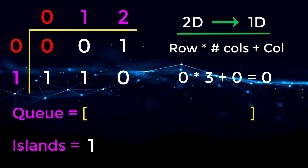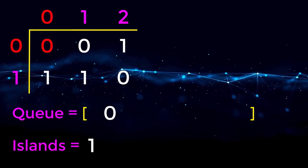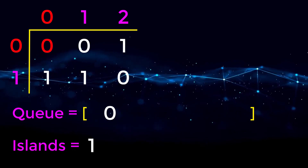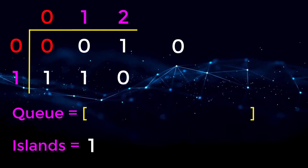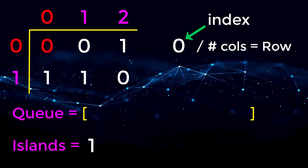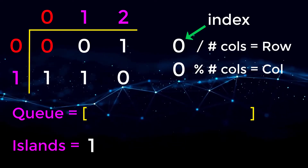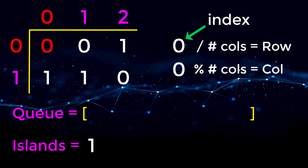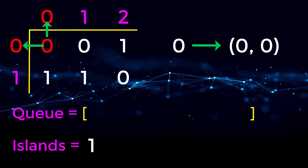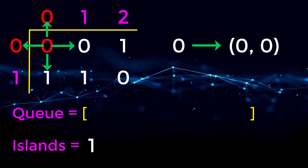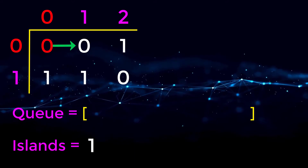We add the number zero to our queue and start our BFS from this position. We continuously remove and add to our queue until there is no more land connected together. Pulling from the queue we get the number zero, and we convert this back to a 2D coordinate: zero divided by three is zero for the row, and zero mod three is zero for the column — giving us position zero zero. Now we check the left, up, right, and down directions. Above zero zero is out of bounds, so we ignore it.